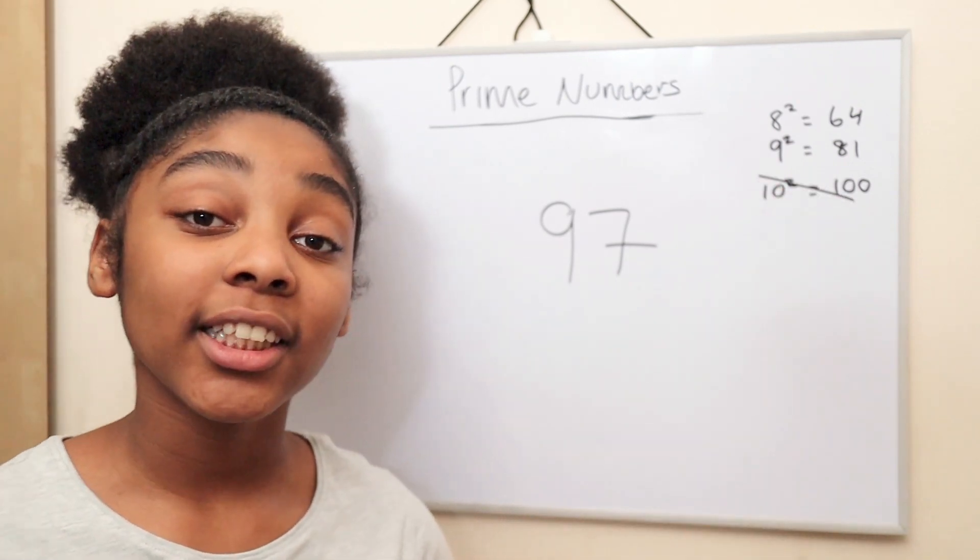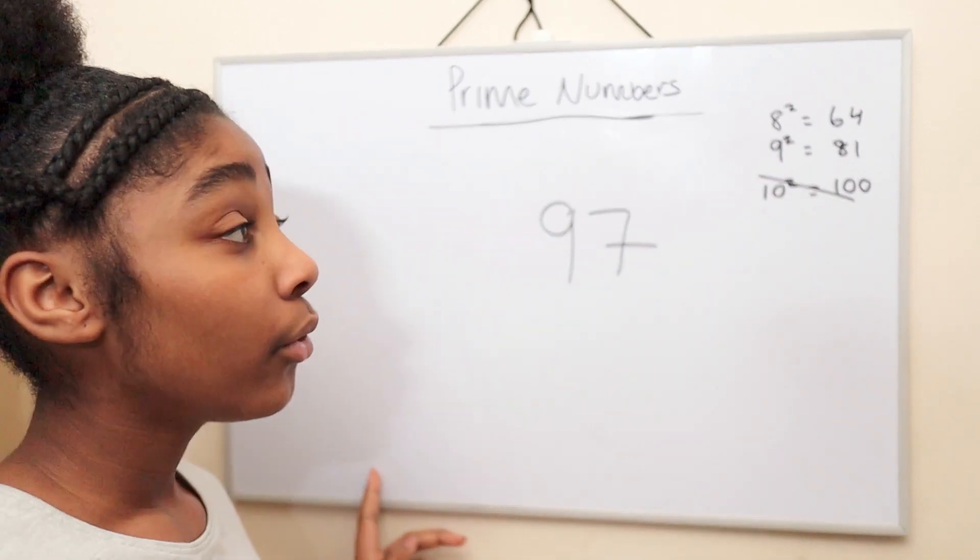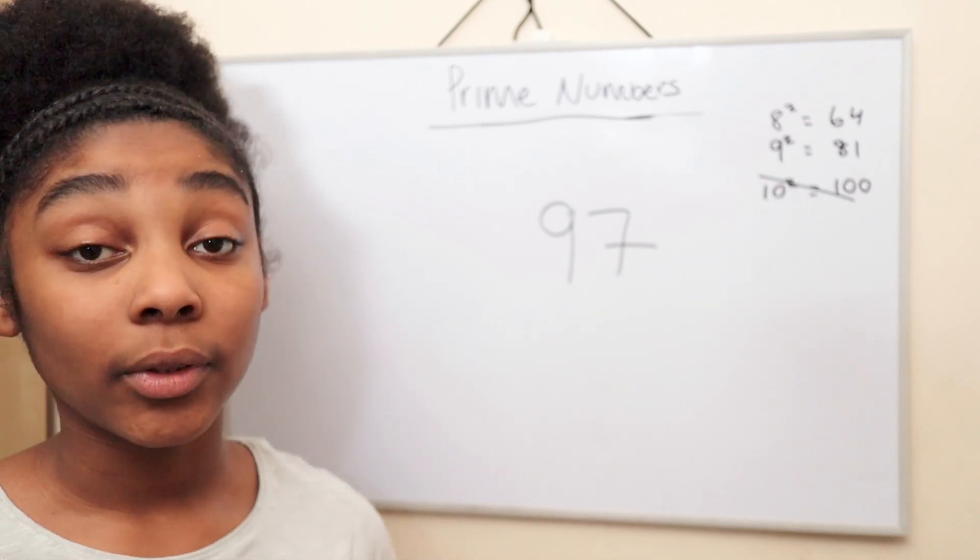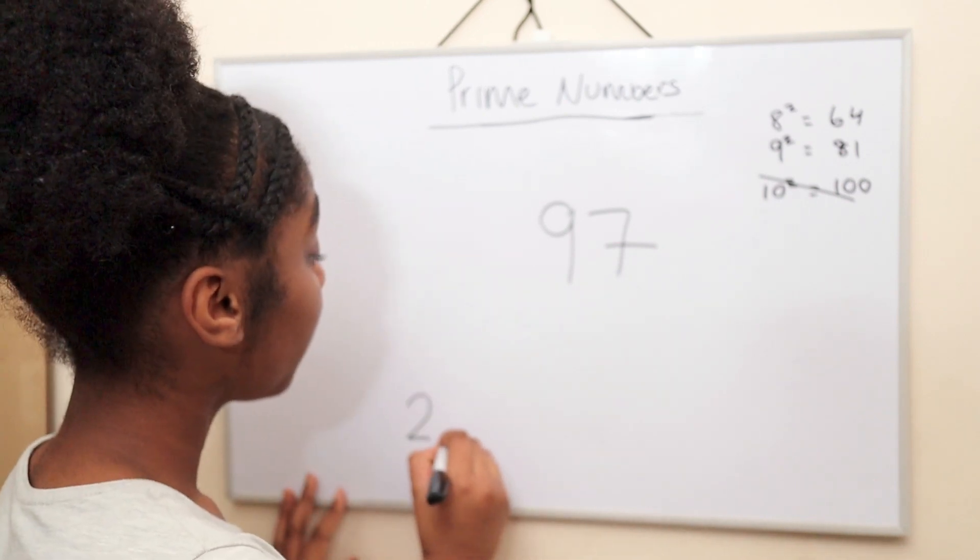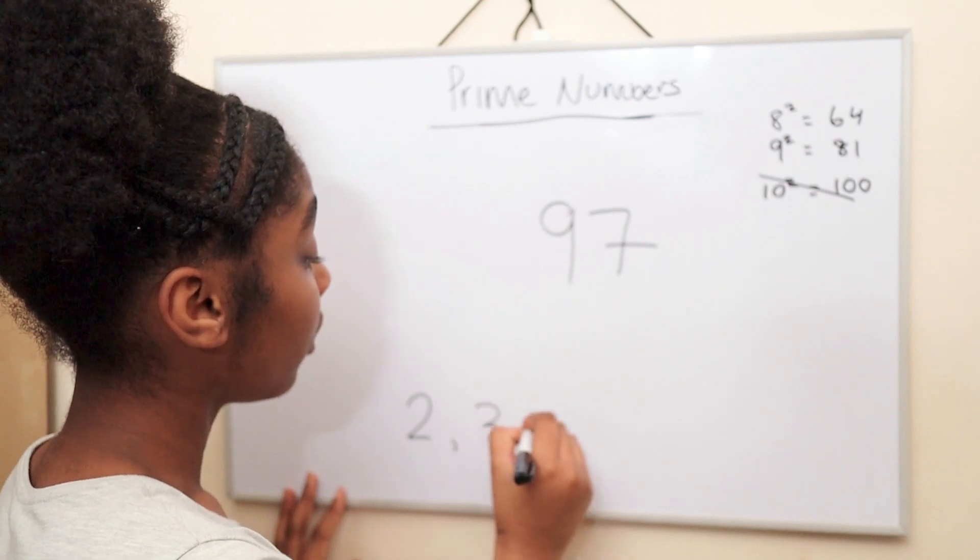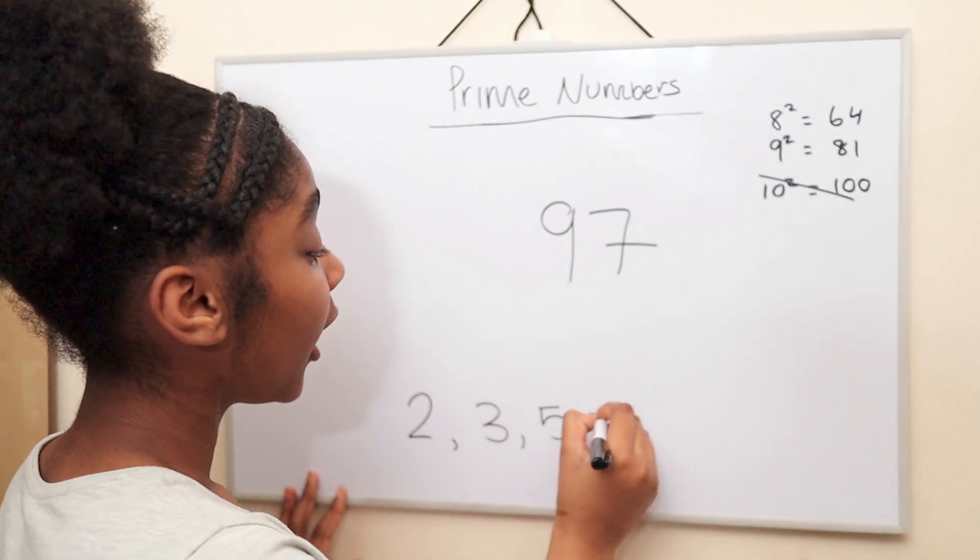Now, for the next step we'll need to write down all the prime numbers that go up to 9: 2, 3, 5, and 7.